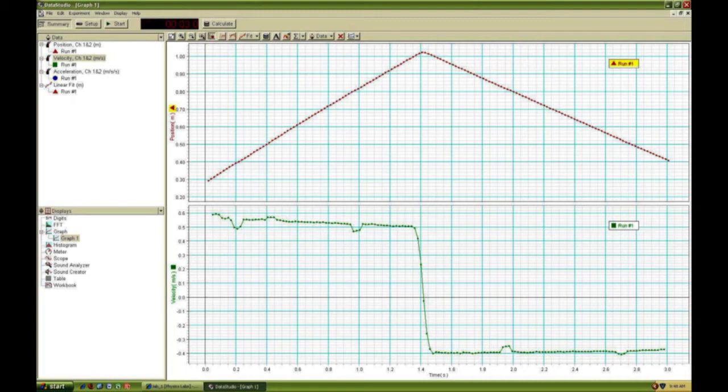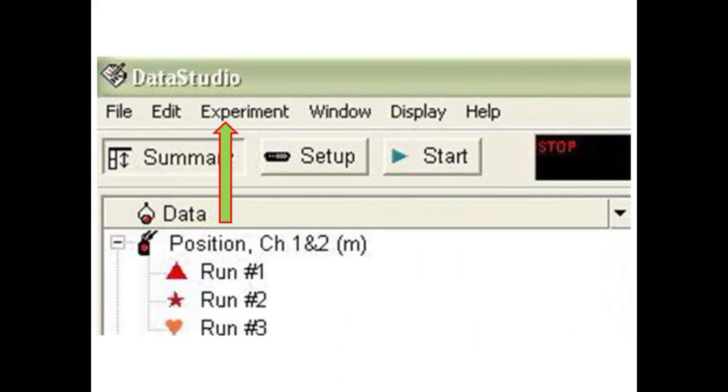However, when the cart is returning, the position decreases with time with a negative slope and velocity. One trick you should learn early on in your lab experience is the ability to delete data runs that are flawed. Click on Experiment in the menu and choose Delete All Data Runs.